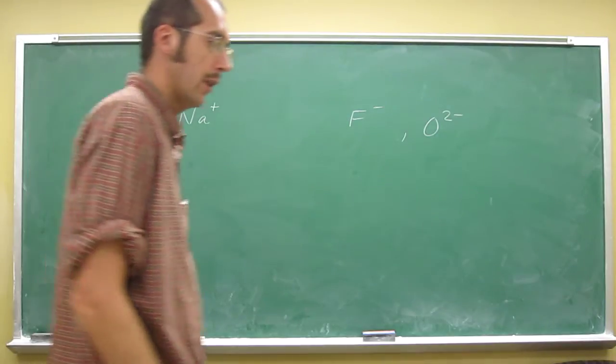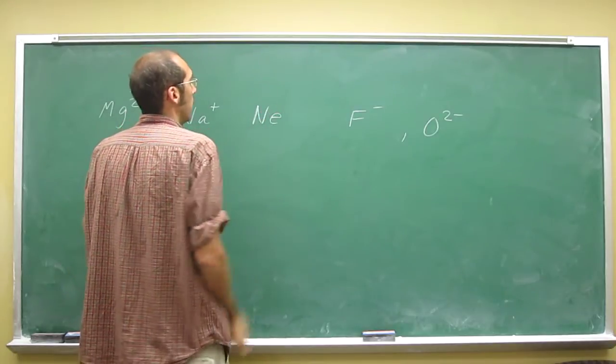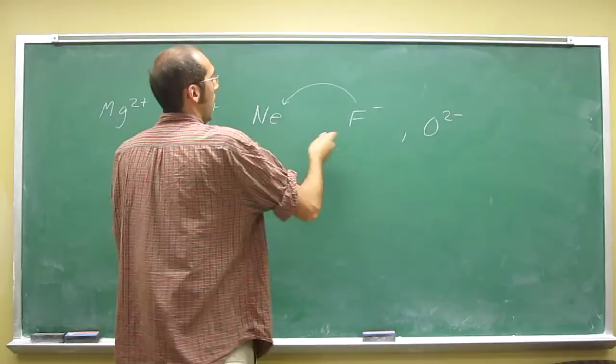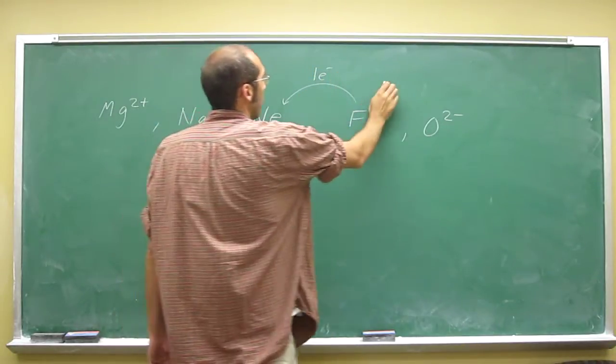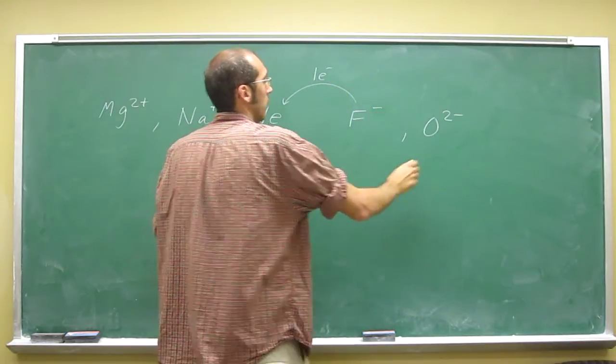Why? Because they're all trying to attain the neon electron configuration. So F minus needs to gain one electron, or F needs to gain one electron to become F minus.